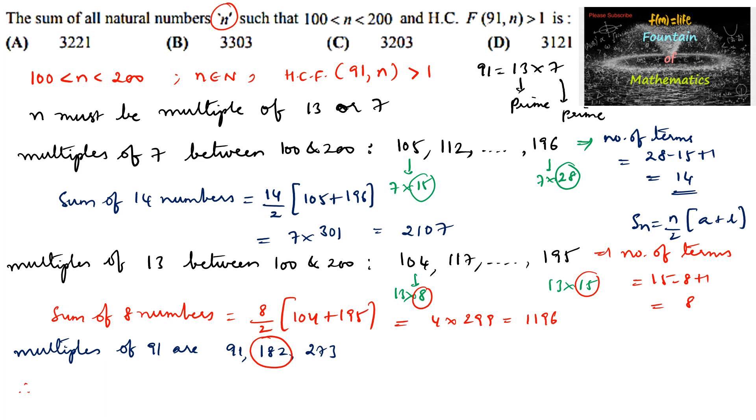Therefore, the total sum is equal to 2107 plus 1196 minus 182. By simplifying, you will be getting the answer 3121. So we choose option D. We can go with answer D.